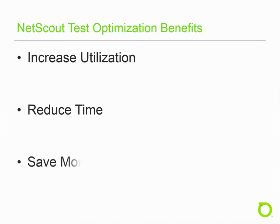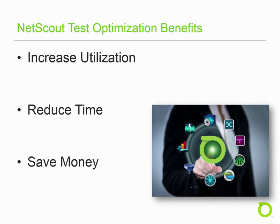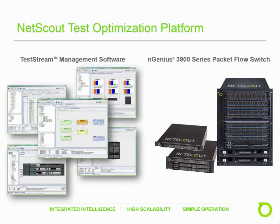This webinar has outlined the objectives, challenges, and optimization solutions for cyber and security test labs. NetScout's test optimization solutions offer secure layer 1 switching with layer 2 through 4 intelligence. Our solutions play a vital role in ensuring that cost drivers are addressed and efficiency is improved through increased utilization of test tools, a reduction in the amount of time required to configure and tear down test topologies, and money saved on test tools and infrastructure. Thank you for listening to this webinar. For more information, please contact your local NetScout account manager or visit www.netscout.com.